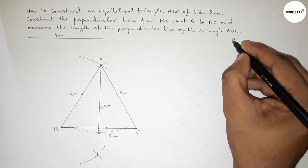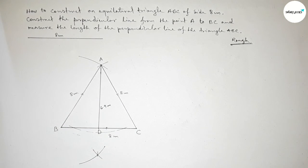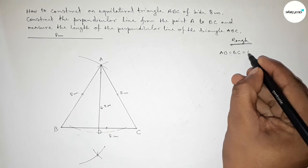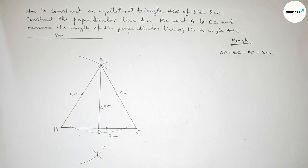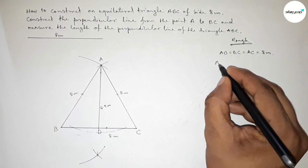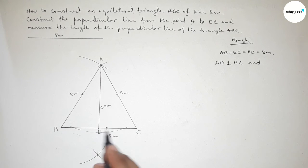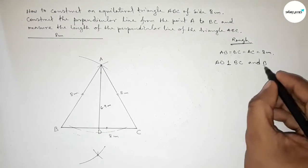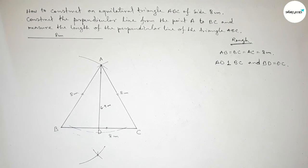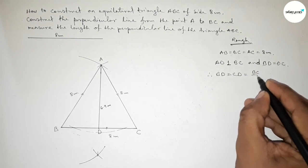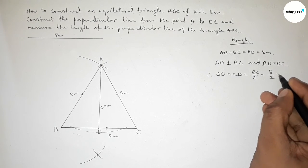Now briefly discussing the back-calculation. Given the length of all three sides equals 8 centimeter, so AB equals BC equals CA equals 8 centimeter. The perpendicular line AD is perpendicular to BC, and AD bisects the line BC into equal parts, so BD equals DC. Therefore BD equals DC equals BC divided by 2, which is 8 divided by 2, so this is 4 centimeter.